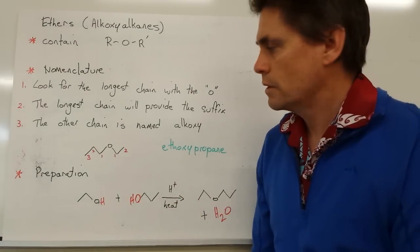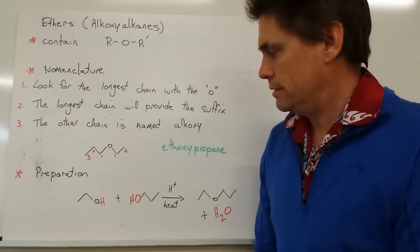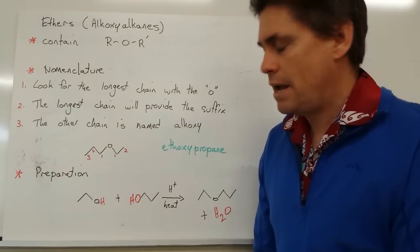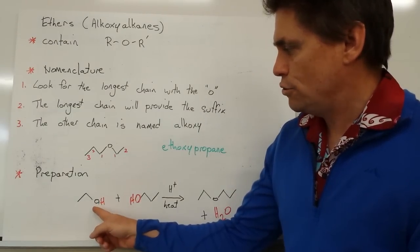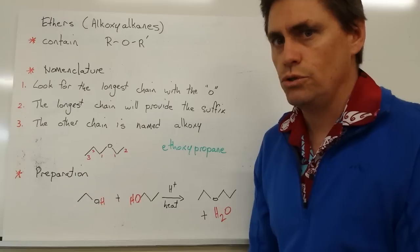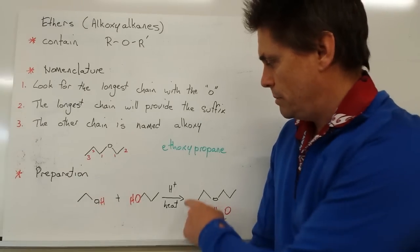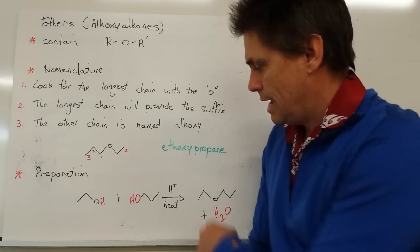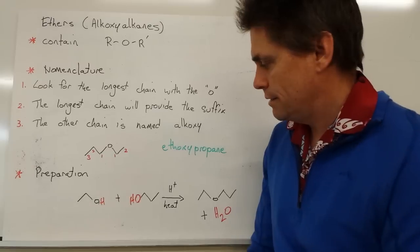How do we prepare ethers? In order to prepare an ether, we need to get two alkanol molecules or two alcohols. We put them in the presence of an acid catalyst and provide the system with some heat to catalyze the reaction.